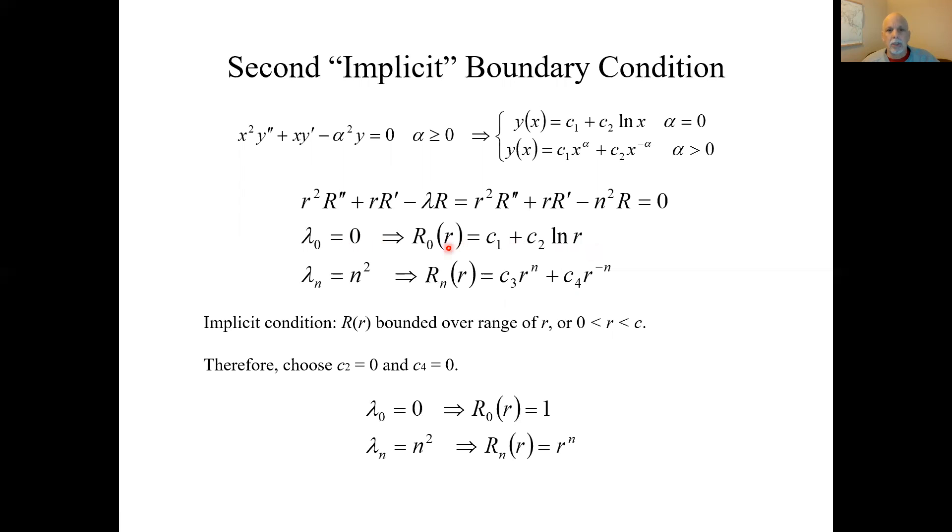Here were the corresponding solutions to the R equations for those eigenvalues. At R equals 0, natural log goes to minus infinity, that's unbounded, so we set C to 0. And this R to the minus n also blows up at R equals 0, so we set C to 0.